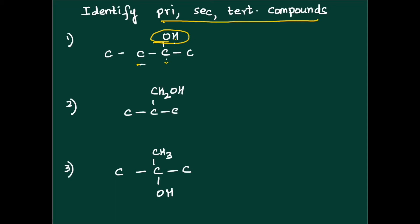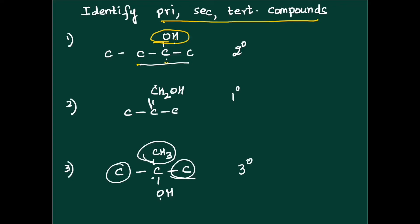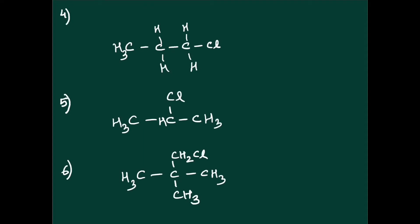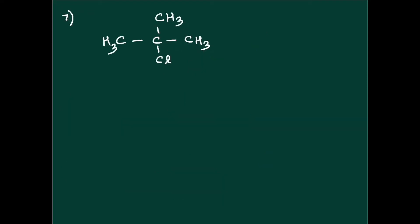Let's discuss the answers. OH is attached to a carbon which is attached to 2 other carbon atoms — so this is 2 degree or secondary. OH is attached to a carbon which is attached to only 1 other carbon atom — this will be primary or 1 degree. OH is attached to a carbon which is attached to 3 carbon atoms — absolutely, this is a 3 degree or tertiary compound. For the halogen compounds: the carbon to which Cl is attached is only attached to 1 other carbon — 1 degree; Cl attached to a carbon with 2 other carbons — 2 degree; Cl attached to a carbon with 3 other carbons — 3 degree or tertiary.